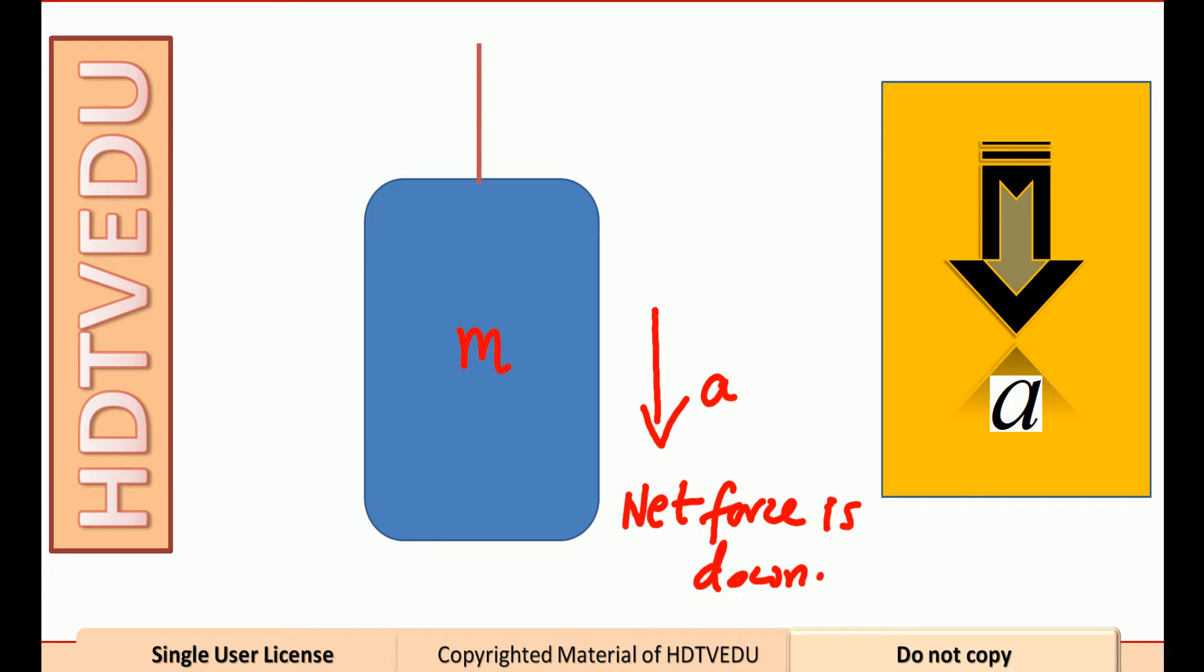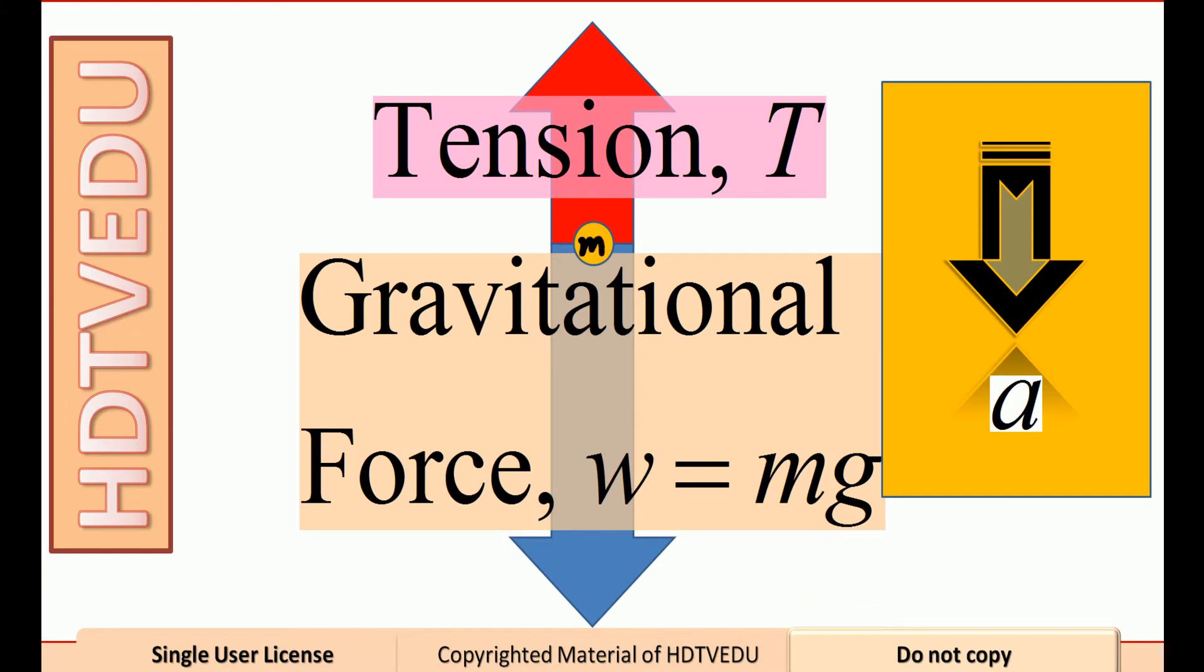What acts vertically up? The tension within the cable. Why? The tension is a pulling force and it always acts away from the object. So here is the mass m. Tension acts vertically up. Gravitational force acts vertically down.